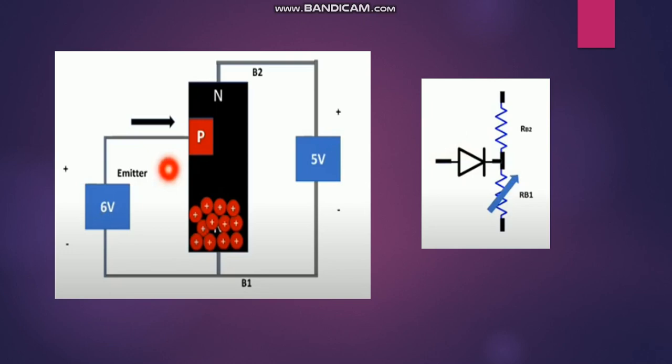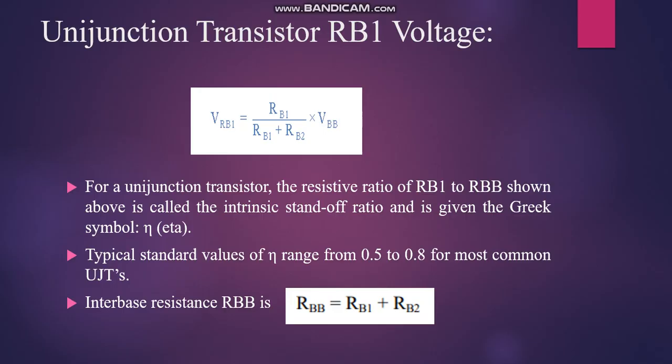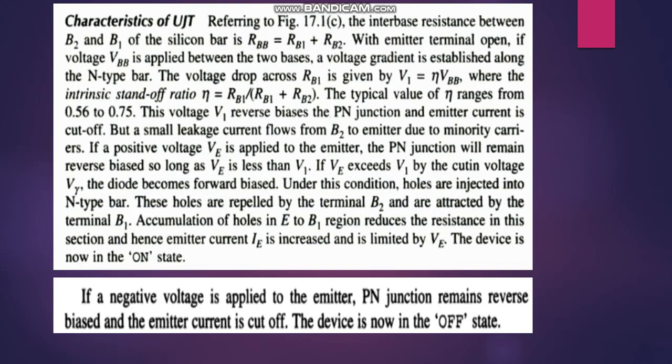The UJT acts as a switch and oscillator — not as an amplifier. The intrinsic standoff ratio Eta (η) is defined as Rb1 divided by (Rb1 + Rb2), where Rb1 + Rb2 is the interbase resistance RBB. The typical value of η is 0.56 to 0.75.